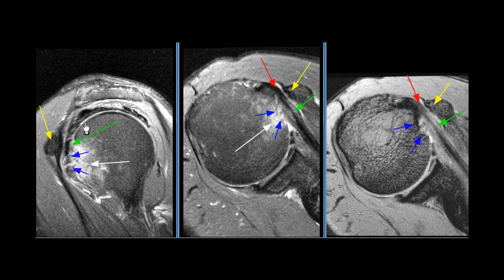There is rotator cuff tendinosis with mild bursal surface fraying of the supraspinatus tendon. These findings are consistent with subcoracoid impingement and rotator cuff tendinosis.